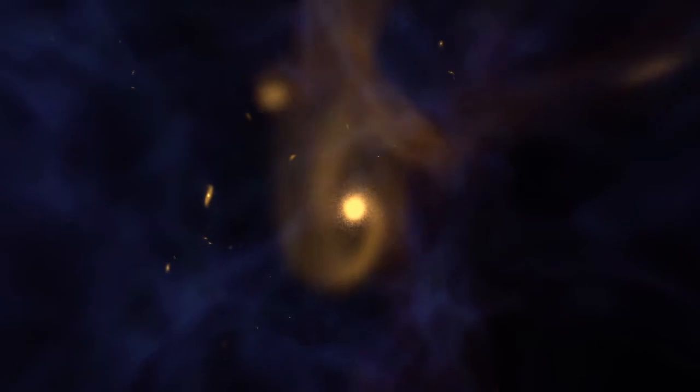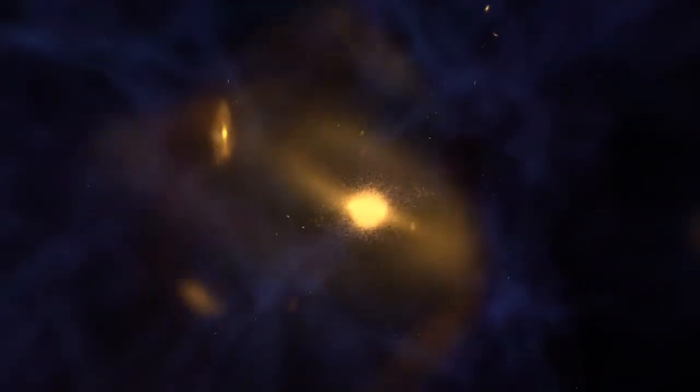The earliest galaxies were small dwarfs, smaller even than the ones Hubble has seen. They grew by colliding and merging with other small galaxies, as shown in this simulation.